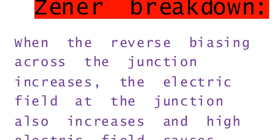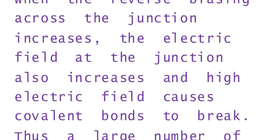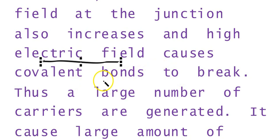When the reverse biasing across the junction is increased, the electric field at the junction also increases. The junction is reverse biased and there is no majority carrier current — current is because of the leakage current, the minority carriers. As we are increasing the voltage across the junction, E also increases, because electric field equals potential over distance. If the electric field is sufficiently strong, it breaks the covalent bonds — the electric field pulls the carriers out of the bonds.